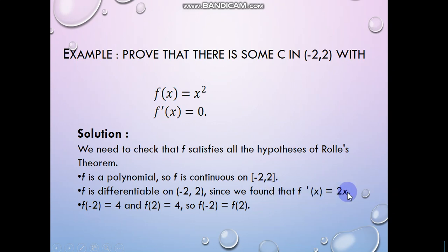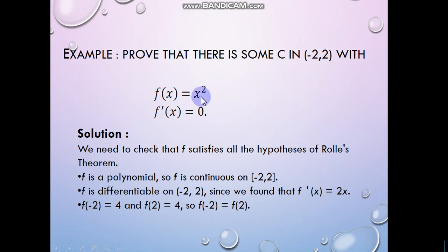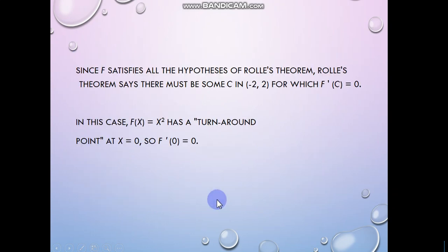The derivative is f'(x) = 2x. Now we check the condition f(a) equals f(b) at the endpoints. f(−2) = (−2)² = 4 and f(2) = (2)² = 4. That means these values are equal — f(−2) equals f(2). That condition is satisfied.